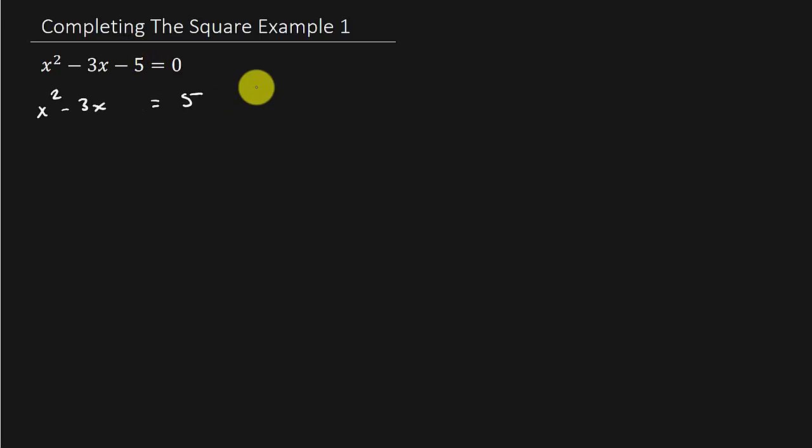You take the constant term and you've got to move it to the other side. And then what we do is we take the middle term, the 3, and we half it. Now remember, halving it is also the same thing as multiplying by a half.